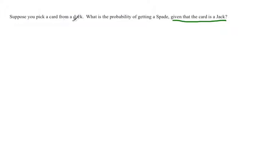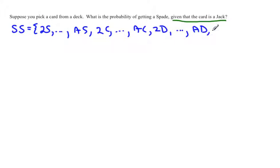The original experiment is to pick a card from a deck. The sample space includes the two of spades through the ace of spades, two of clubs through the ace of clubs, two of diamonds through the ace of diamonds, and two of hearts through the ace of hearts. If you weren't given any information, this would be your original sample space.